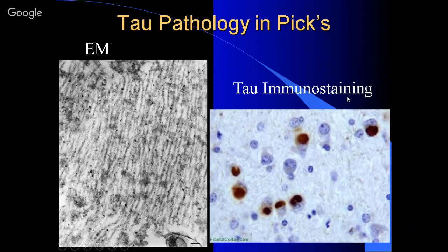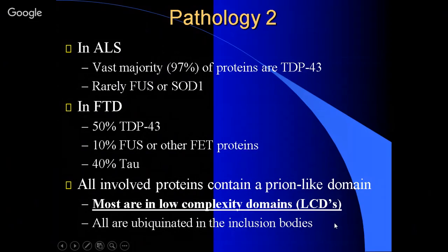In ALS, 97% of the proteins that accumulate are TDP-43. Rarely you see fuse or SOD1. In frontotemporal dementias, half the cases are TDP-43, 10% fuse or related protein, and 40% tau, which you really don't find in ALS. All of the involved proteins have a prion-like domain — I'm going to call it a low-complexity domain instead — and they are ubiquitinated in the inclusion bodies.